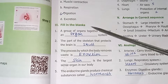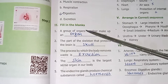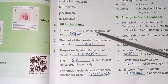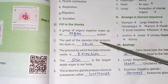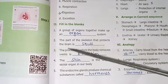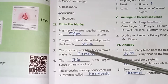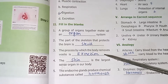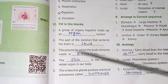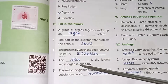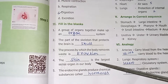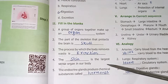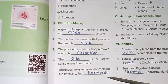Promoter 2: Fill in the blanks. A group of organs together make up an organ system. The part of the skeleton that protects the brain is the skull. The process by which the body removes waste is excretion. The skin is the largest sense organ in our body. The endocrine glands produce a chemical substance called hormones.